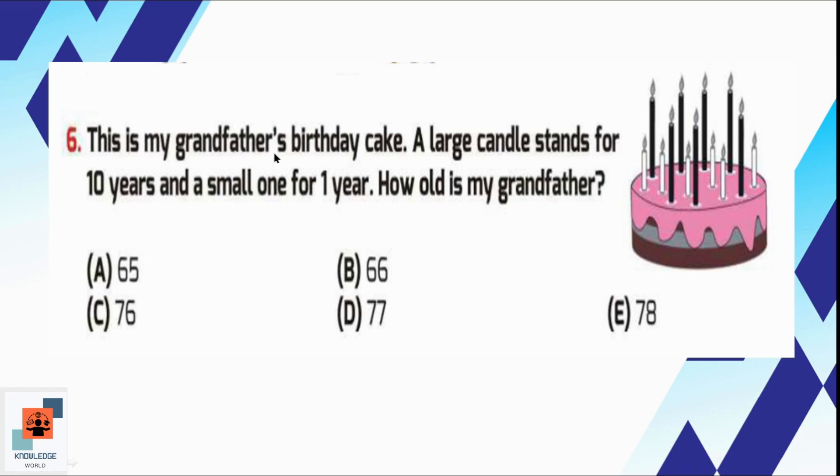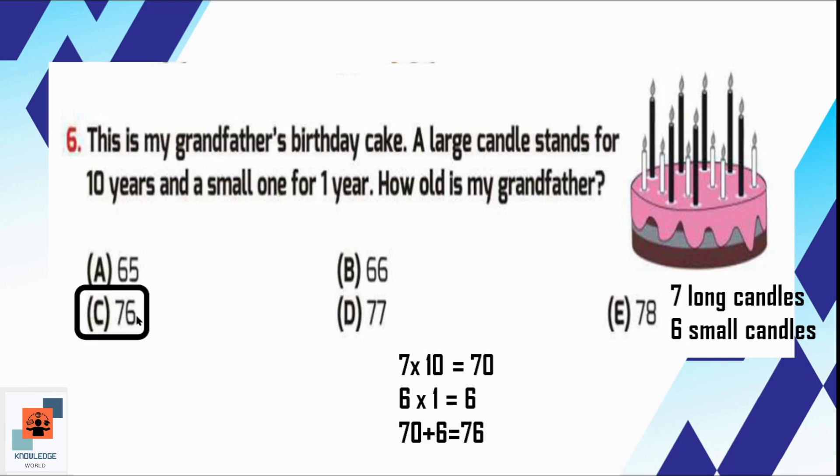Question number 6, this is my grandfather's birthday cake. A large candle stands for 10 years and a small one for 1 year. How old is my grandfather? Each large candle is representing 10 years, so 10 sevens are 70. Each small candle is representing 1 year, so 6 ones are 6. Now we will add 70 and 6. The total is 76. It means the age of the grandfather is 76. Option C is the correct option.